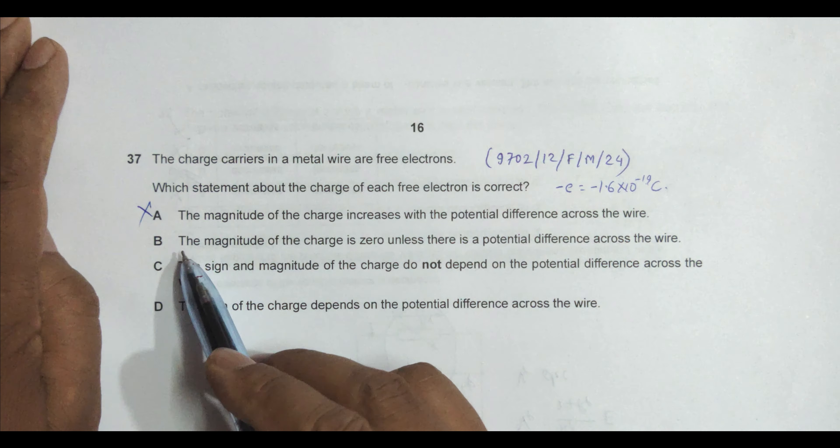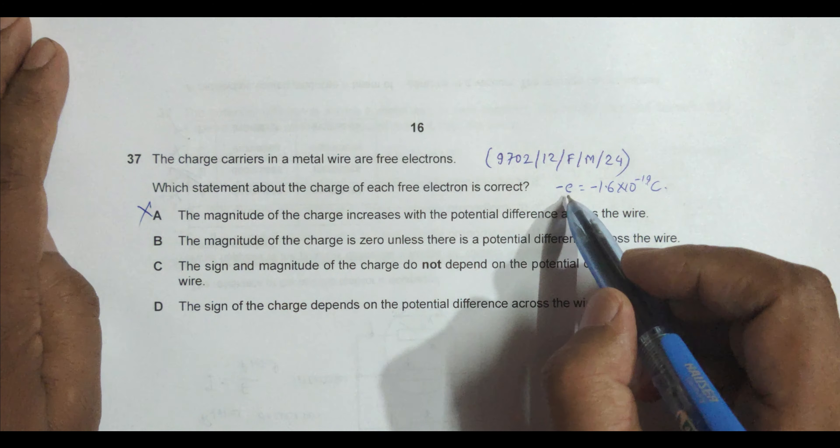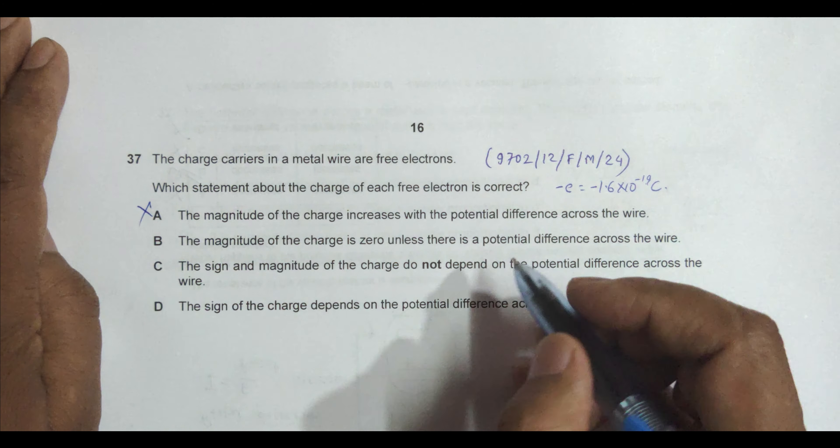Next is the magnitude of the charge is zero unless there is a PD across the wire. Again no, because charge should be this, not zero. For the free electrons it is not zero.